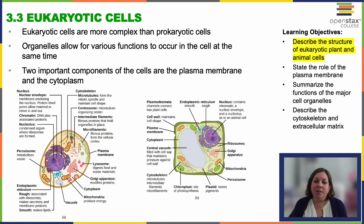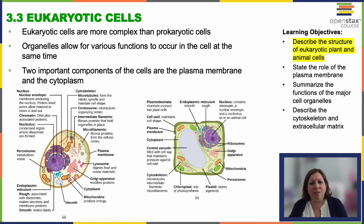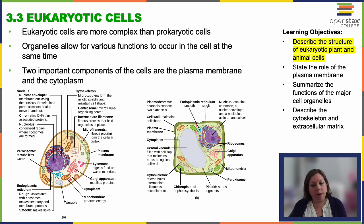Eukaryotic cells are the cornerstone of complex life forms. They provide the foundation for the diversity and intricacy of all living organisms. They're characterized by compartmentalized structures and the presence of membrane-bound organelles, including that distinct nucleus that houses the genetic material — a big distinguishing feature from prokaryotes.